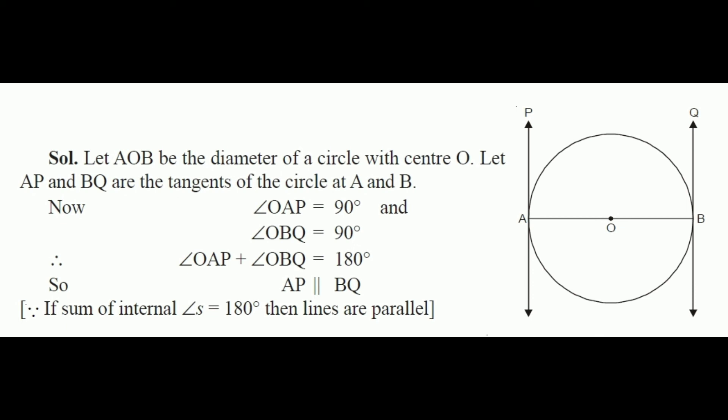Recalling our knowledge of parallel lines: if AP and BQ are two lines intersected by line AB, and the sum of their interior angles is 180°, then the two lines are parallel. We have proved that angle A + angle B = 180°, so line AP is parallel to line BQ. Therefore the tangents drawn at the ends of the diameter are parallel to each other.